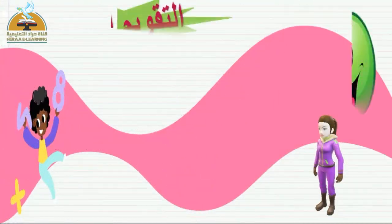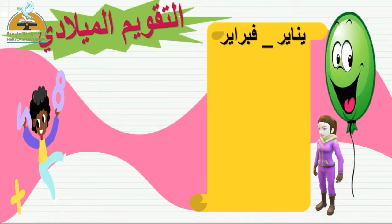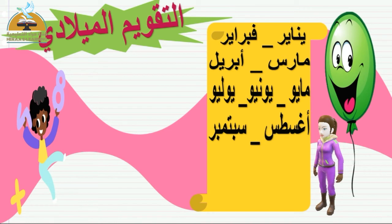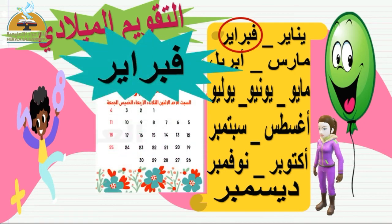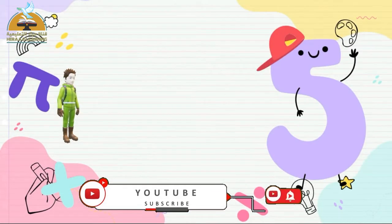عندنا التقويم الميلادي. كم شهر فيه؟ اثنا عشر شهرًا. يلا بينا نقول الأغنية: يناير، فبراير، مارس، أبريل، مايو، يونيو، يوليو، أغسطس، سبتمبر، أكتوبر، نوفمبر، وآخرهم ديسمبر. إحنا دلوقتي في شهر فبراير، وإحنا في اليوم الرابع والعشرين، الموافق يوم الاثنين. يبقى أربعة وعشرون من شهر فبراير.